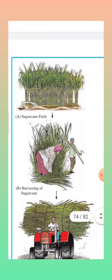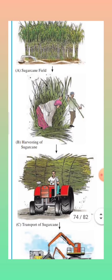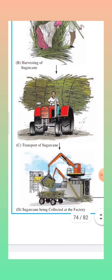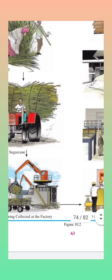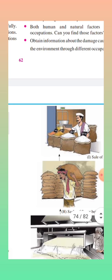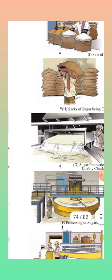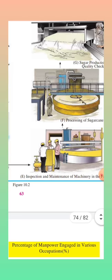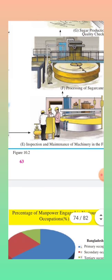Classifying the sugar production occupations: sugarcane fields and harvesting are primary occupations. Transporting sugarcane is a tertiary occupation. Processing at the factory is a secondary occupation. Sale of sugar is also a tertiary occupation. Sugar production processing is secondary occupation. Inspection and maintenance of machinery in the factory is a quaternary occupation.